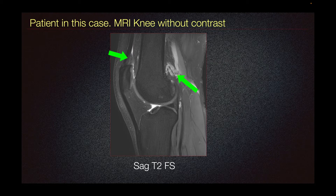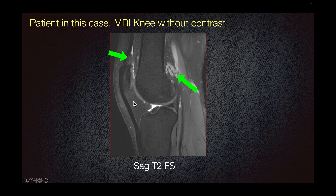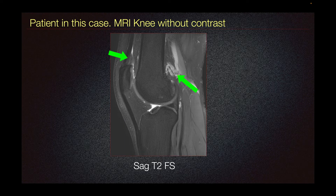The patient in this case presented with this MRI knee without contrast. We can see some mild edema signal of the quadriceps fat pad, and also this lobulated cystic lesion described as arising from the Baker's cyst, but it's not well depicted on this sagittal imaging. We also look for any signs of edema signal in the Hoffa's fat pad, or any large joint effusion, which the patient does not have, or any synovial thickening to assess for synovitis.